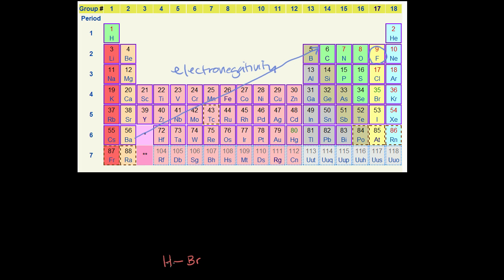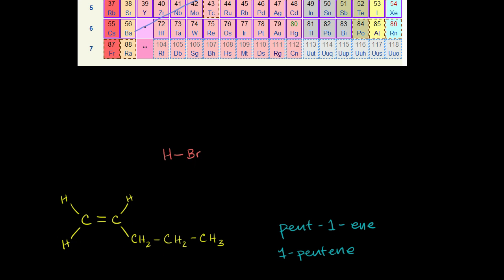So when we think about hydrogen bromide, hydrogen is way up here on the left side of the periodic table. Bromine is all the way to the right. Bromine is much more electronegative. So in this situation, since bromine is more electronegative, it will hog the electrons in this bond. And since it's hogging the electrons in this bond, you'll have a partial negative charge on the bromine end and a partial positive charge on the hydrogen end.